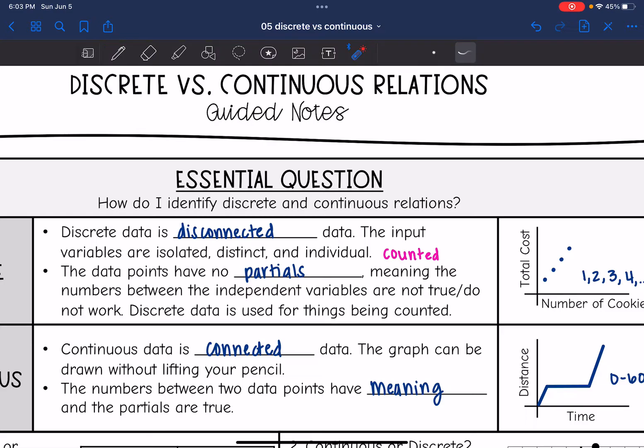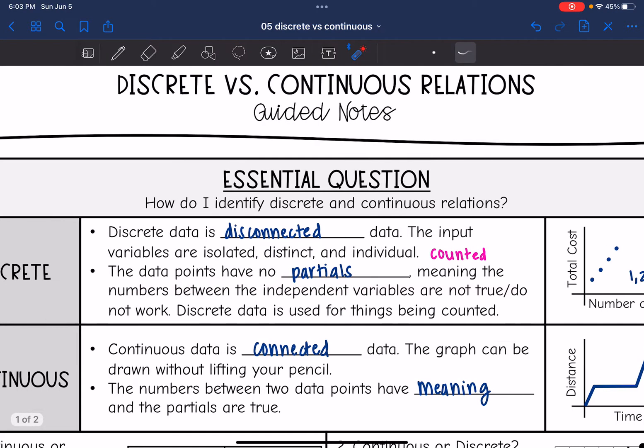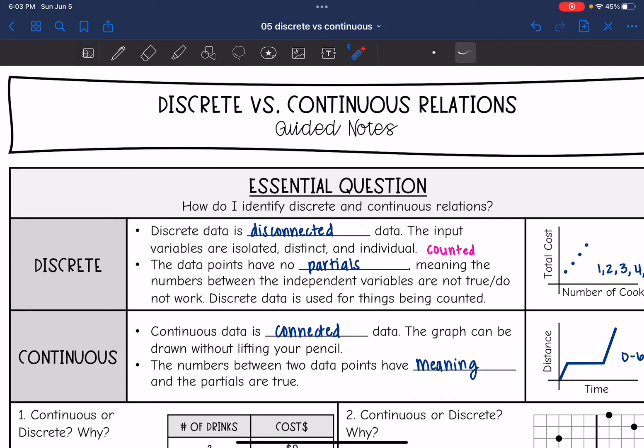The data points have no partials, meaning that the numbers between the independent variables are not true or do not work. And like I said earlier, it's used for things being counted.